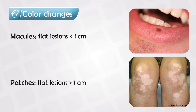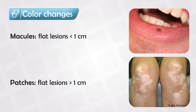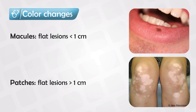The example we have for macules are, of course, freckles. And the example we have for patches are birthmarks, which are also known as congenital nevus. So that's for flat lesions — it's either macule or patch, depending on the size.